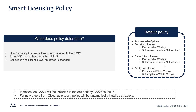But what is this policy? The policy determines the licensing behavior of the box. Specifically, it determines how frequently the device tries to send a report to the CSSM and if an ACK is required back from the CSSM for the licensing process to complete. It also defines the behavior of how the switch is going to react if the license level on the device is changed. By default, the ACK is not needed — it is an optional step.